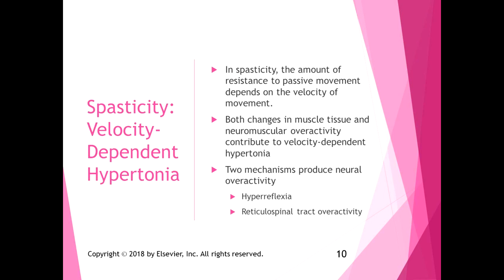The two mechanisms that produce neural overactivity in spasticity are hyperreflexia and reticulospinal tract overactivity. As a clinical example: working with a patient in the pool on an underwater treadmill with an underwater camera, her gait looked fairly normal at slower speeds, but once I turned up the speed, her gait became more abnormal because she had increased spasticity with increased velocity of movement.